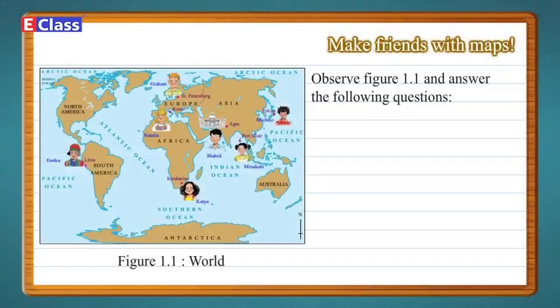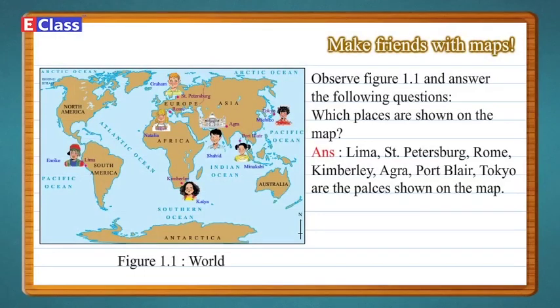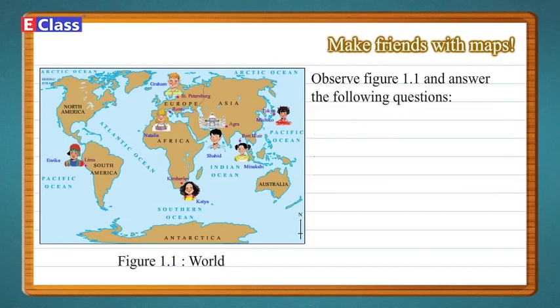Observe Figure 1.1 and answer the following questions. Which places are shown on the map? Answer: Lima, St. Petersburg, Rome, Kimberley, Agra, Port Blair, and Tokyo are the places shown on the map.